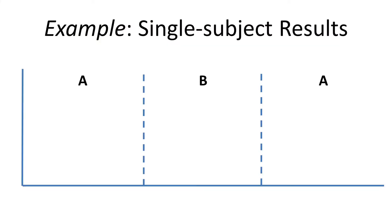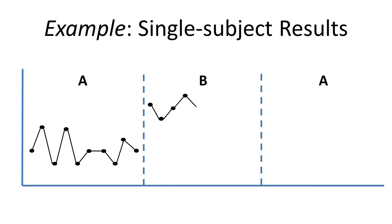Here's an example of some data you might hope to get from a single subject design. You can see three phases: A, then B, then back to A. The A phases are both lower than the B phase, and while they don't form a perfectly straight line, they do seem to level out over the number of trials. That's the kind of data you would hope to get.